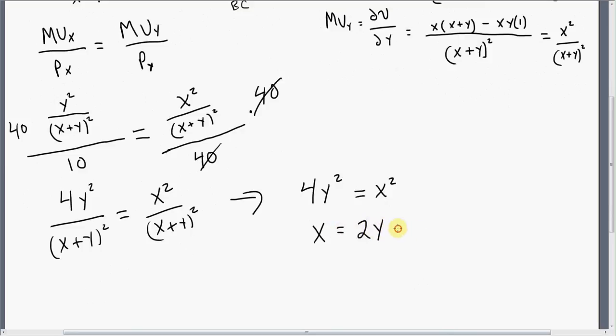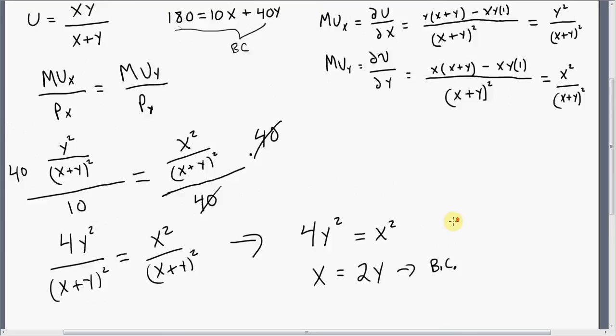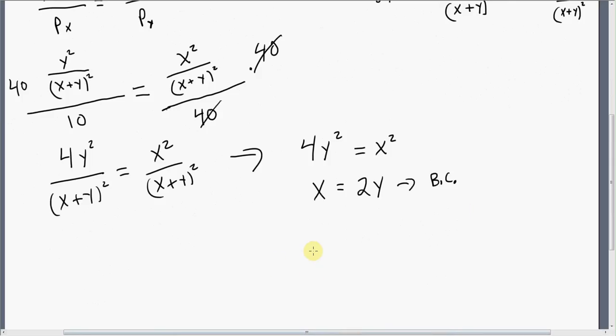So the next step is to plug this into the budget constraint. We're going to plug that into the budget constraint, which was 180 equals 10X plus 40Y. So let me go down over here and do that. So our budget constraint was 180 equals 10X. Well, X is just 2Y, so I'm just going to make that substitution, plus 40Y.